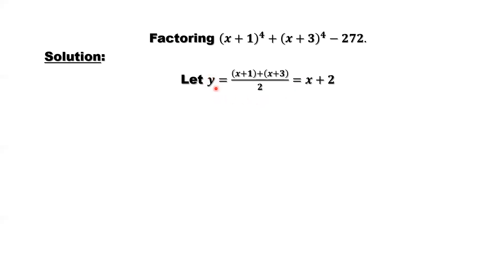After we define y = x+2, we can replace x+1, x+3 in terms of y. If x+2 is y, x+1 should be y-1. x+3 should be y+1. This is the original polynomial. We replace x+1 by y-1. Replace x+3 with y+1. Right now, you still don't see why this method is good.